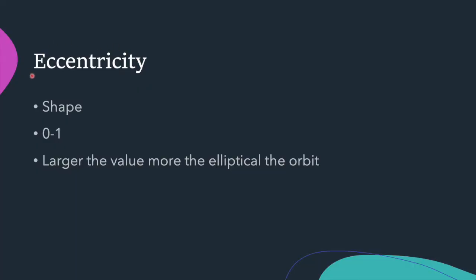The second Keplerian element is eccentricity, denoted by small 'e'. We can define eccentricity as how far the orbit has deviated from the circular shape. The value of eccentricity lies between 0 and 1. For a circular orbit, the value of eccentricity is 0. As the shape of the orbit becomes more and more elliptical, the value of eccentricity will be near to 1. The value of eccentricity and the semi-major axis together decide the shape and size of the orbit.